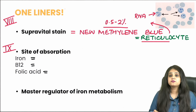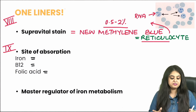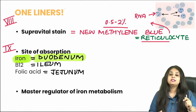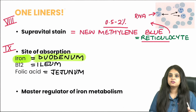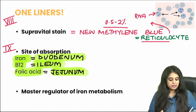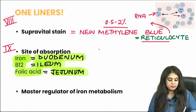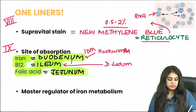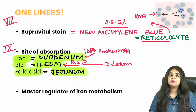Question nine is about sites of absorption — basic but often asked. Iron is absorbed in the duodenum; this is important in celiac disease (gluten sensitivity) because celiac attacks the duodenum, causing iron deficiency anemia. B12 is absorbed from the terminal ileum and folic acid from the jejunum. Regarding infections: hookworm causes iron deficiency anemia, whereas Diphyllobothrium latum causes B12 deficiency (megaloblastic anemia).